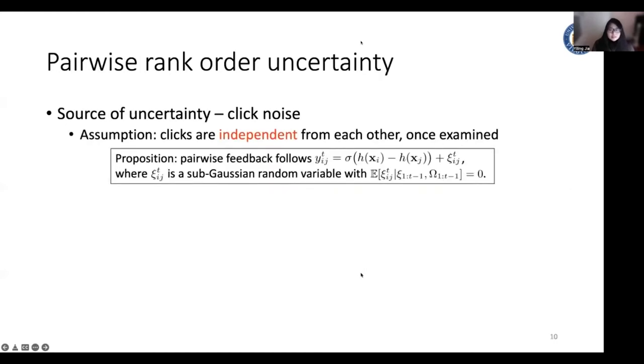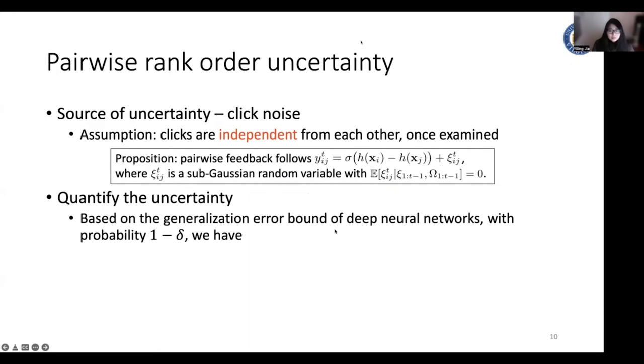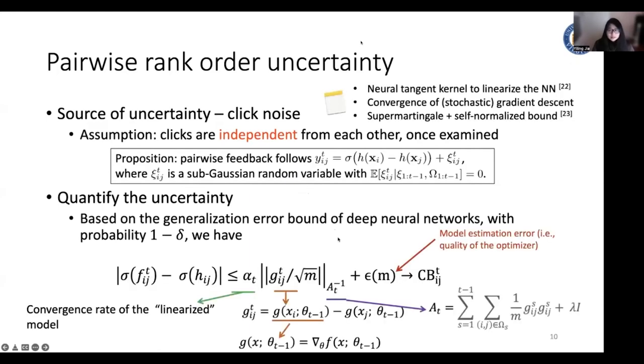In order to perform this uncertainty-based exploration, we need to quantify the model's confidence about its estimation. The source of the uncertainty is the click noise. We assume that for all the examined documents, the clicks are independent from each other, and the pairwise noise follows sub-Gaussian distribution. Based on this, we leverage the most advanced technique, neural tangent kernel method, to analyze the uncertainty of the neural network. We have the uncertainty of this estimation bounded like this. So the uncertainty depends on the model's estimation error and the gradient of the neural network.